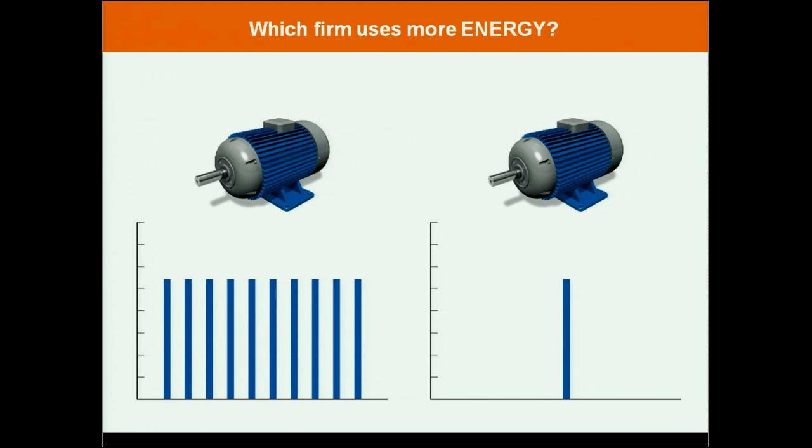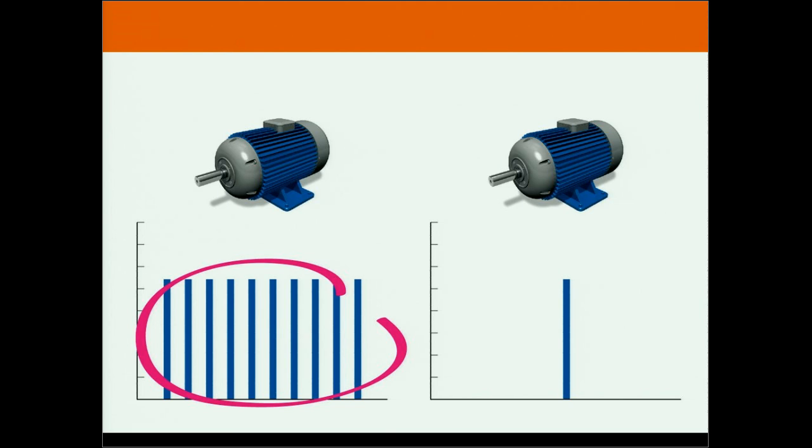Question is, which firm uses more energy? Well, that should be pretty obvious. The first firm running that motor very often, in fact ten times more often than the second, requires the utility to use a lot more energy to generate electricity.